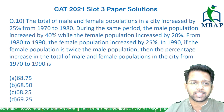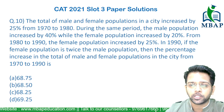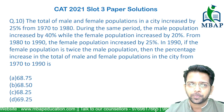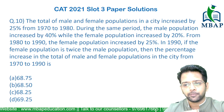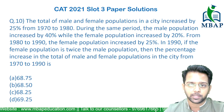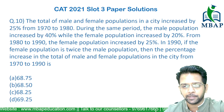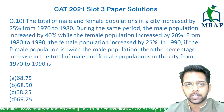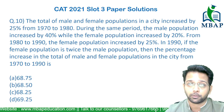Let's have a look at the next question — a slightly detailed one. The total of male and female population in a city increased by 25% from 1970 to 1980. During the same period, the male population increased by 40% and the female population increased by 20%. From 1980 to 1990, the female population increased by 25%. In 1990, if the female population is twice that of the male population, then what is the percentage increase in total population from 1970 to 1990?